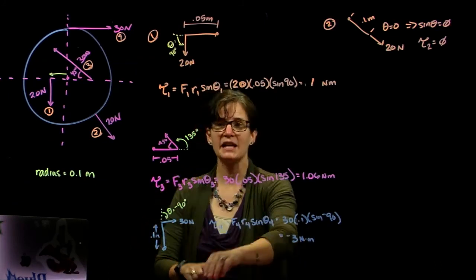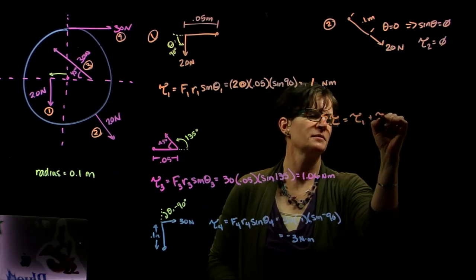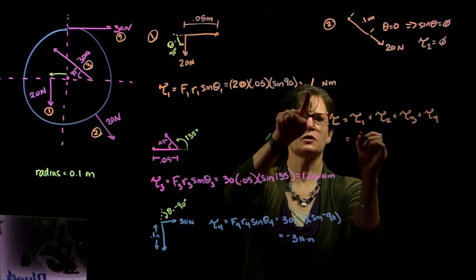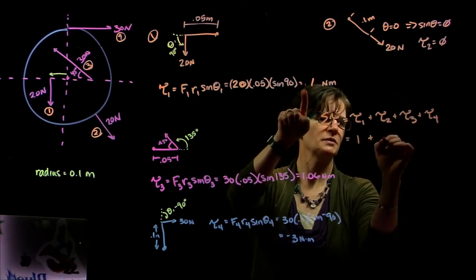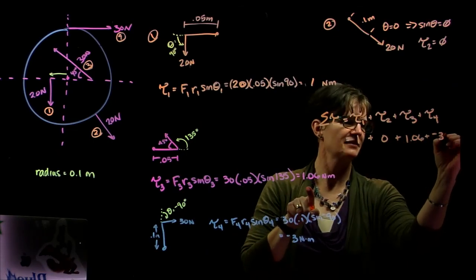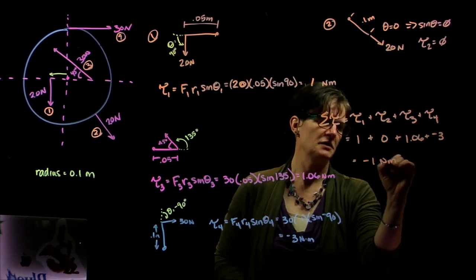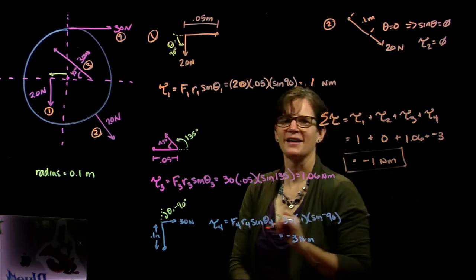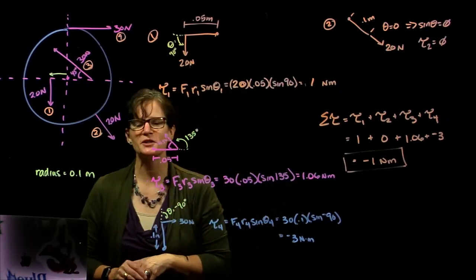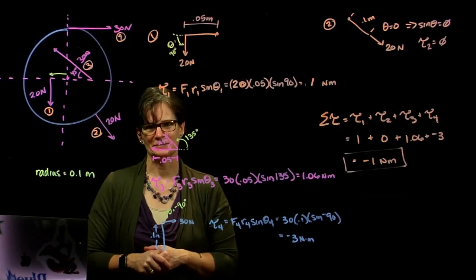So my net torque, the sum of the torques, is torque one plus torque two plus torque three plus torque four. Torque one was a positive one. Torque two was zero. Torque three was 1.06, and torque four was negative three. And so I get about negative one newton meters for my net torque. So looking at the radii and each angle for our situation, analyzing the torques for each one of our forces, and then solving for the net torque. Good job.